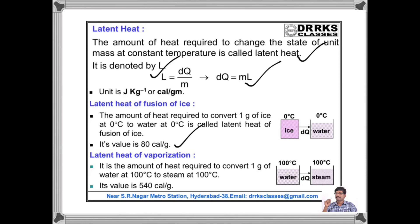Similarly, the latent heat of vaporization is the amount of heat required to convert 1 gram of water at 100°C to steam at 100°C. Its value is 540 Calories per gram.